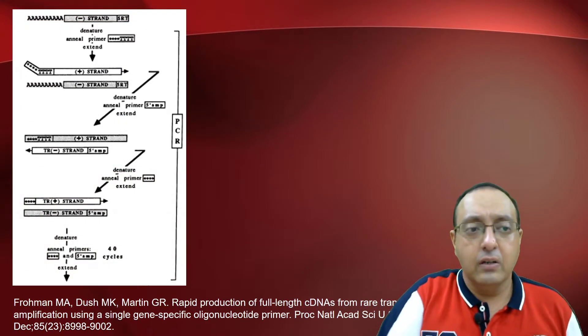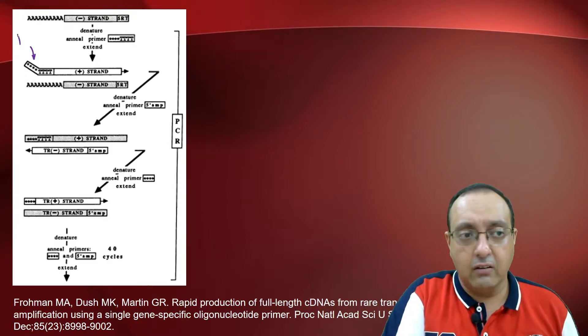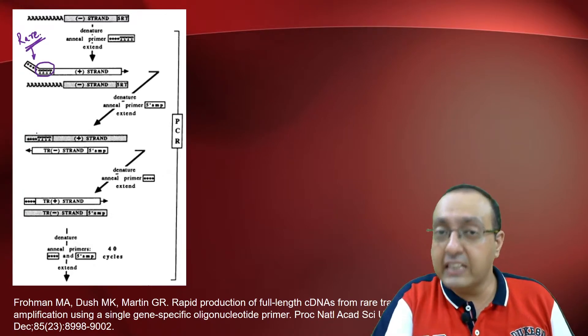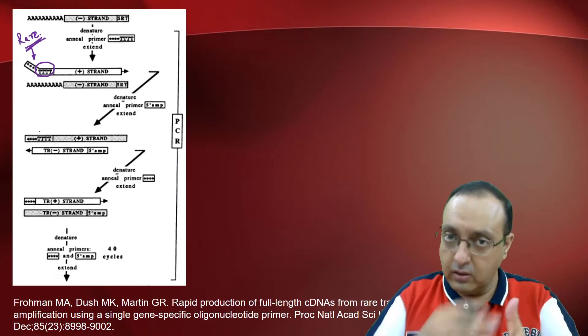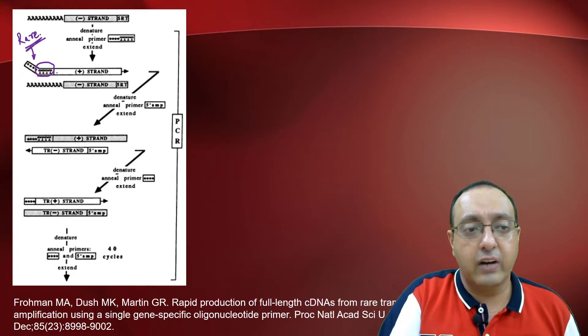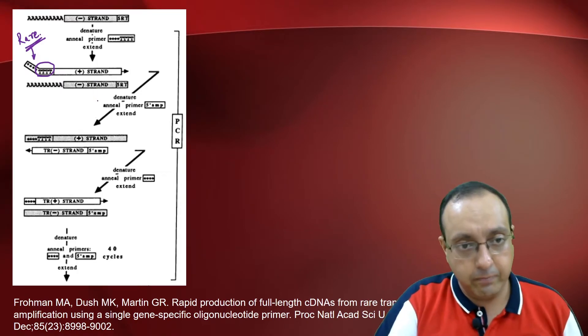In the next step, you will use some restriction enzymes which are rare cutters, rare cutter restriction enzymes, along with a bunch of T residues which will bind to your multiple poly-A residues which you have just added to the negative strand. And then it will lead to the formation of the plus strand of the cDNA.